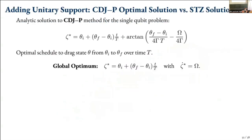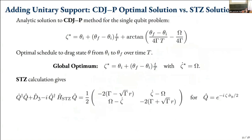With the CDJ optimal control method — completely analytic for a single qubit — we find a linear schedule which is optimal, with an arc-tangent correction term. This is the optimal schedule to drag a state from theta_i to theta_f over time T, where you're completely pinned in the Zeno eigenstate at all times, meaning completely deterministic dynamics despite the measurement. Comparing this with STZ, if you want the off-diagonal terms to be zero, you get exactly the same condition: theta-dot equals omega. For this particular case you get entirely equivalent solutions.